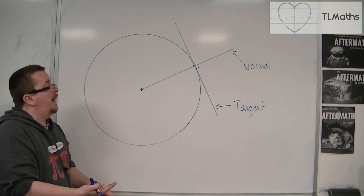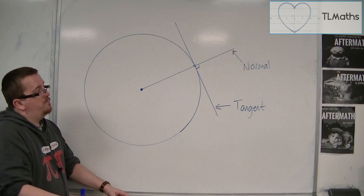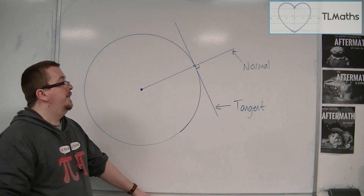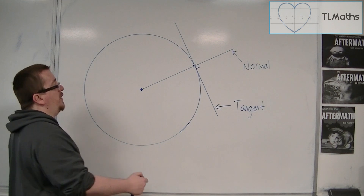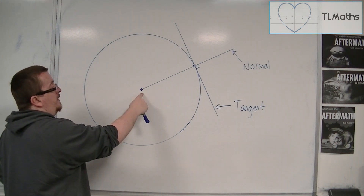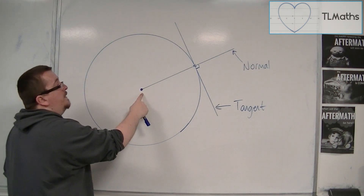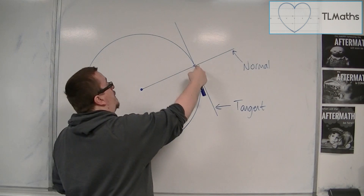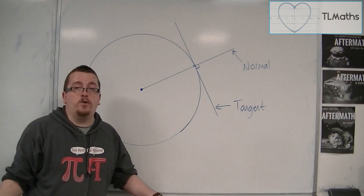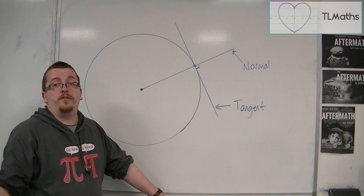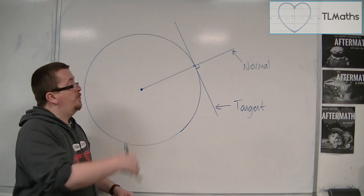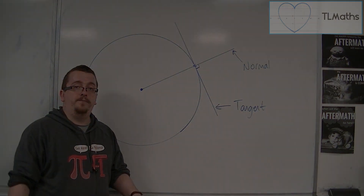These problems are given particular starting conditions. You might be told the centre point and a point on the circle, and then asked to find the equation of the tangent, for example. That's the type of problem we're going to look at in the next video.